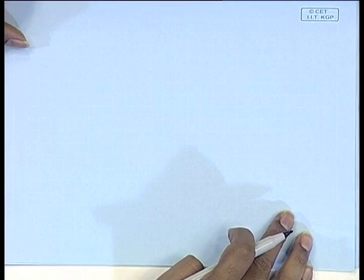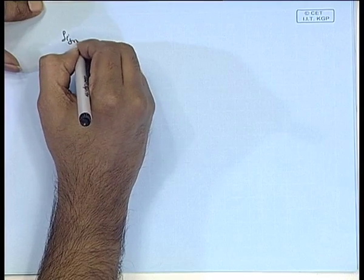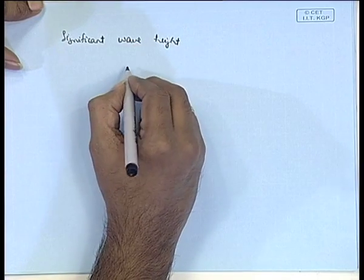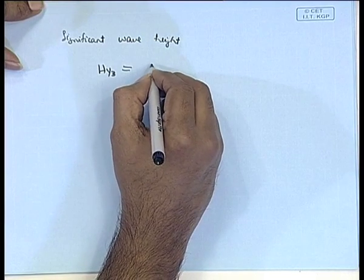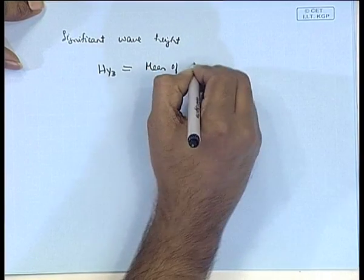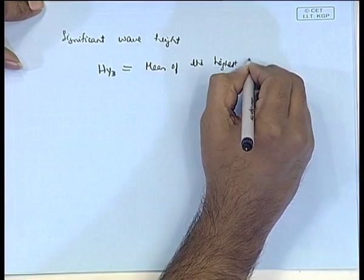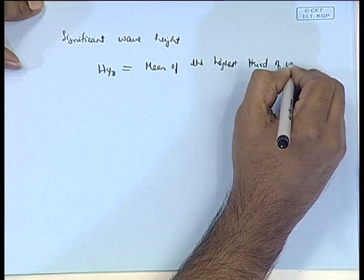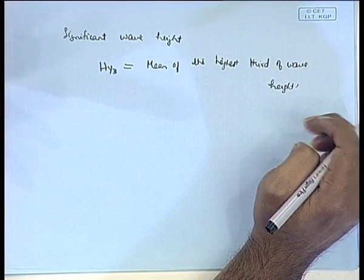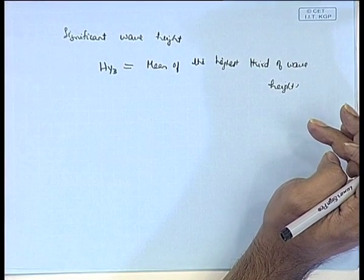The significant wave height, written as H₁/₃, is defined as the mean of the highest one-third of wave heights. It is a very important term used in wave hydrodynamics and is frequently encountered in practice.